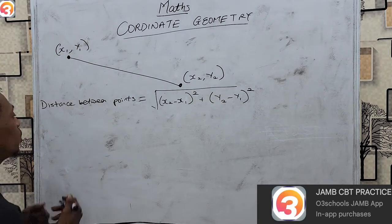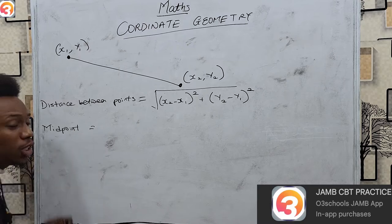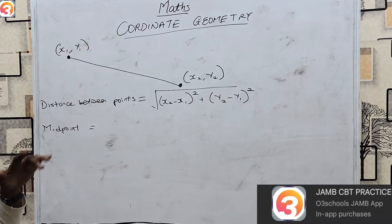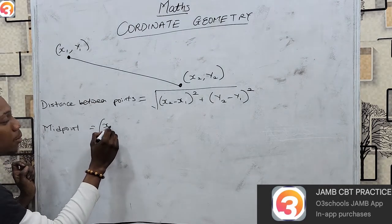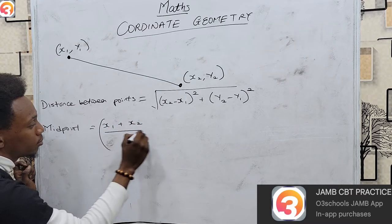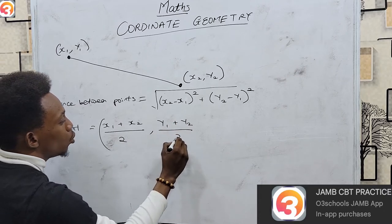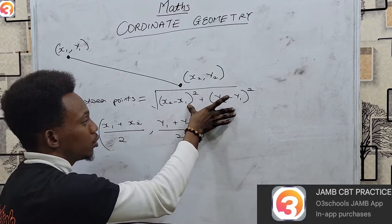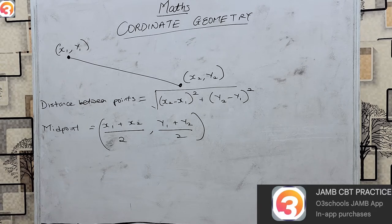That's not the only thing we can do with two points — we can also find the midpoint. The midpoint simply means trying to locate the perfect center between the two points, the exact middle. The coordinates of that midpoint are given by: x1 plus x2 over 2, and y1 plus y2 over 2.